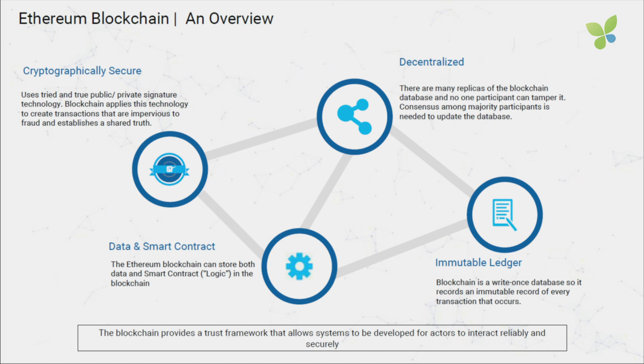Basically on top of this construct, we started to build applications that now look like the modern internet. But the database and the network have always been sort of separate entities. What the blockchain fundamentally does is it takes the database and the network and makes them coterminous — sort of one. In the case of something like Bitcoin or Ethereum, we have hundreds of thousands of nodes all over the world — computers participating in the network — and all of them have the exact same copy of the state of the network.